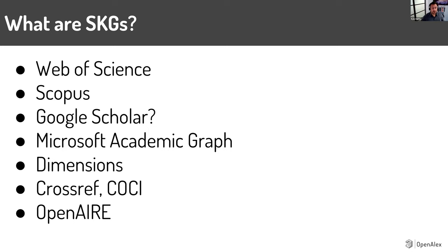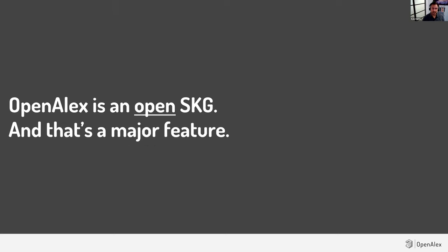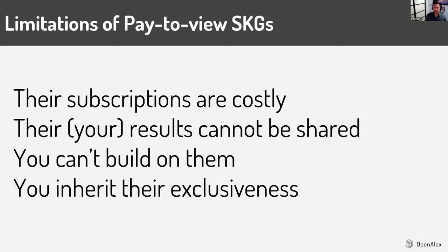You're probably familiar with at least one of the SKGs on this list — Web of Science, Scopus, Google Scholar, Microsoft Academic Graph, Dimensions, Crossref, and OpenAlex. OpenAlex sits firmly in this list of prominent, usable, high-quality SKGs. But really importantly, it's completely open and comprehensive, and that's its major feature. I'm going to spend a few minutes talking about four limitations of the pay-to-view SKGs that really give value to OpenAlex.